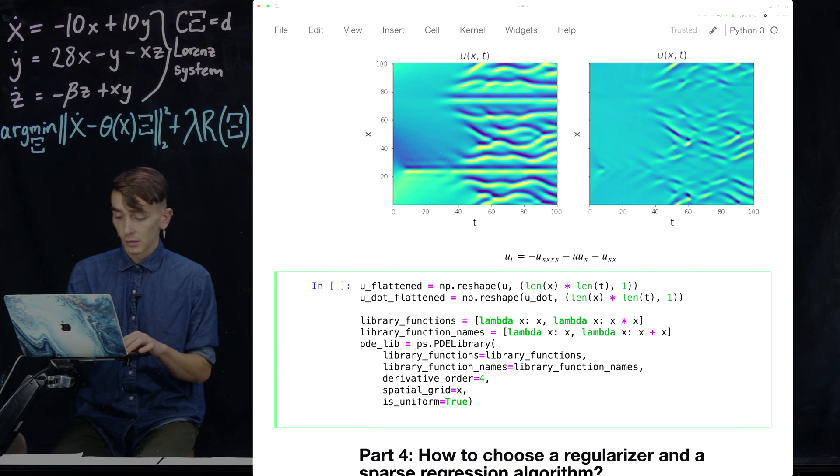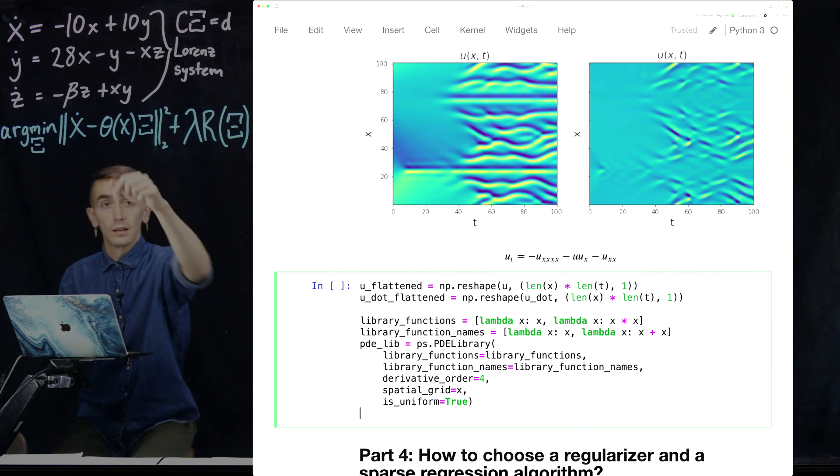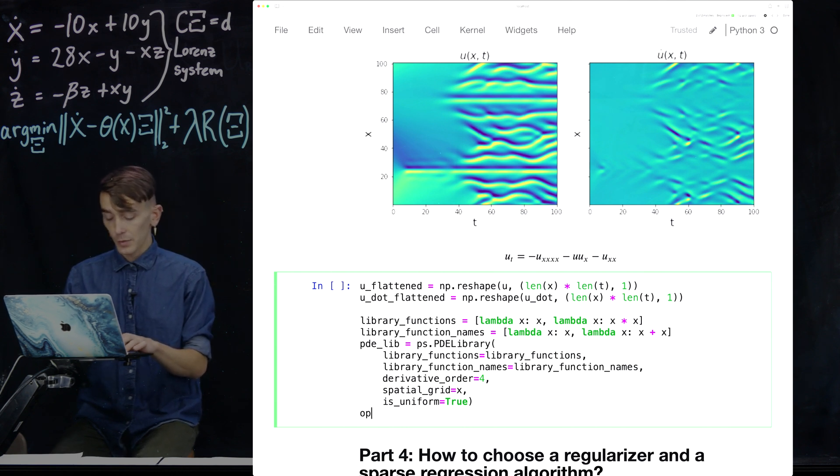So that's good. We have a nice PDE library that's going to generate spatial derivative terms that are put into this candidate library term appearing here. And now we need to define an optimizer.